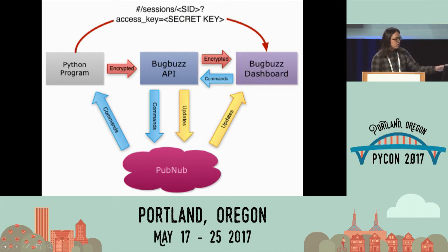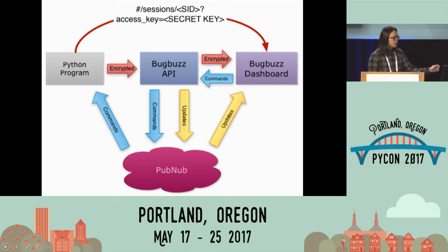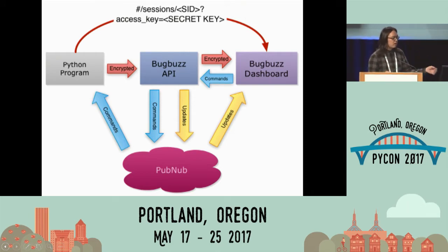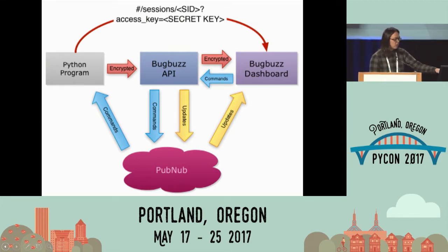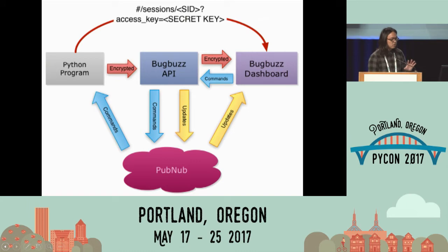So when the debugging session is created, it will create an encrypt key in the Python program, and then you will pass it to the application as a hashtag. For the API server, you won't know anything about your debugging content. You pass it to the Bug Buzz dashboard, which is an Ember app. All the synchronized communication is talking through PubNub. That's it. It's pretty simple — just a prototype. Just trying to think about what we can do to make it better for our debugging experience.